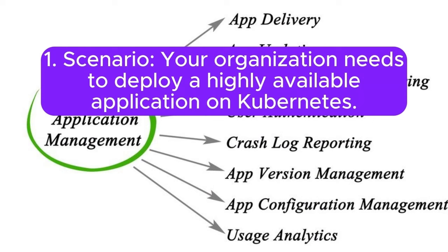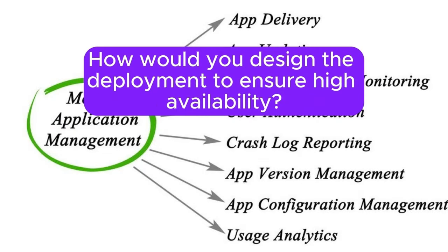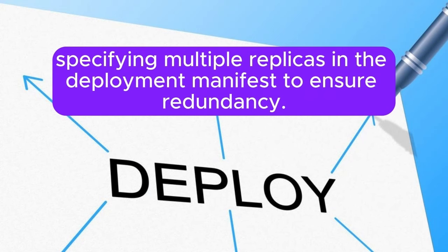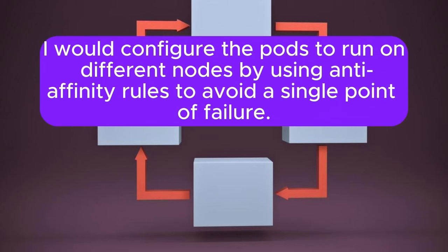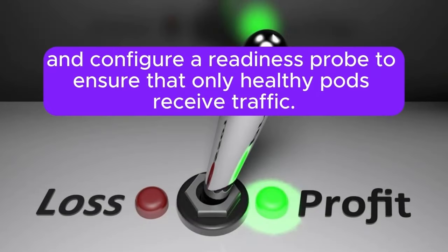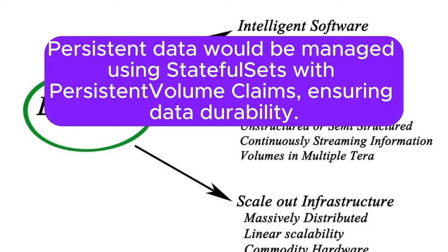Scenario 1: Your organization needs to deploy a highly available application on Kubernetes. How would you design the deployment to ensure high availability? Answer: I would deploy the application using a deployment resource, specifying multiple replicas to ensure redundancy. I would configure pods to run on different nodes using anti-affinity rules to avoid a single point of failure. I would use a load balancer service to distribute traffic and configure a readiness probe to ensure only healthy pods receive traffic. Persistent data would be managed using stateful sets with persistent volume claims.